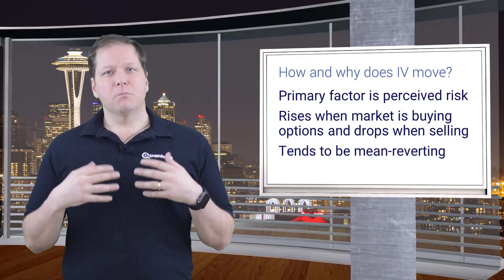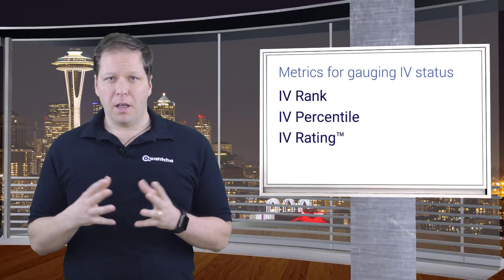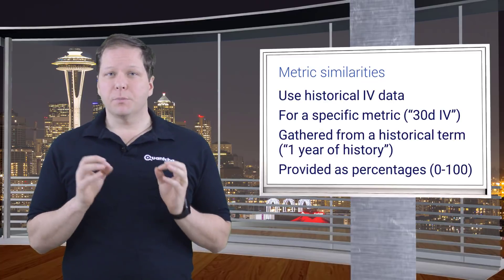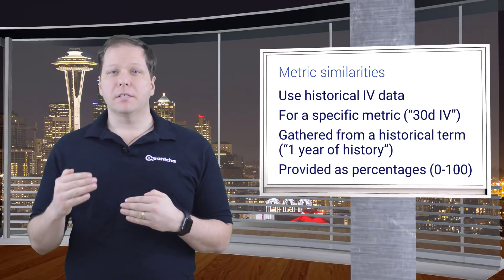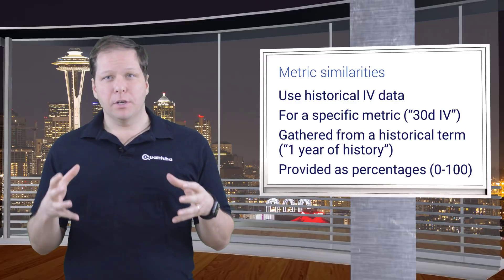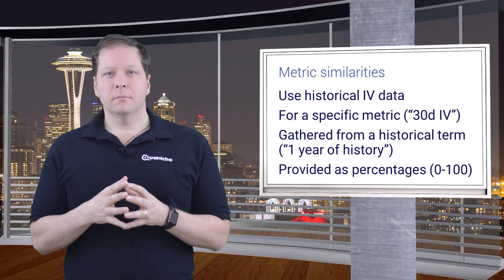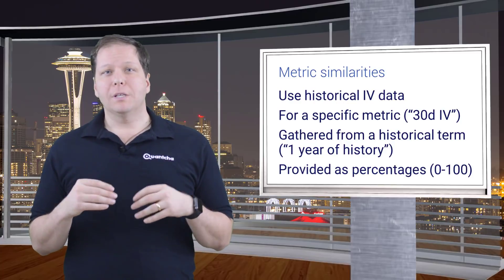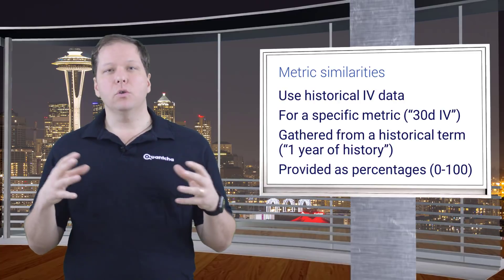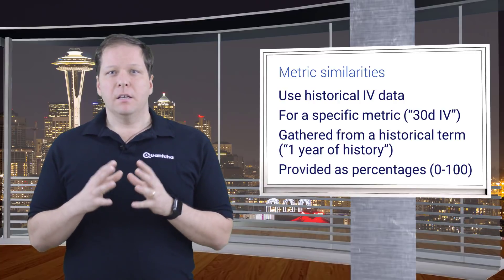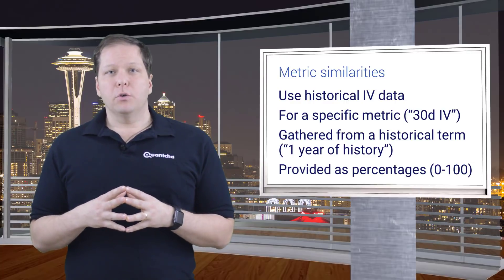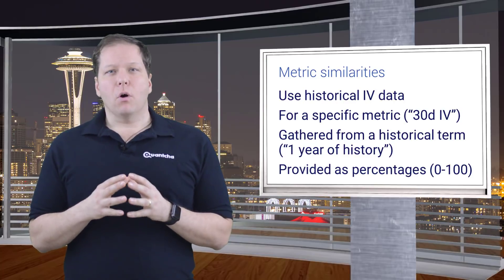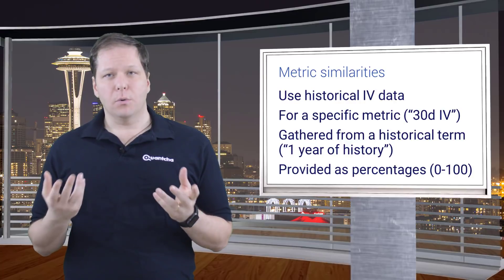Now let's dig into some of the more popular metrics used to evaluate the current implied volatility of a stock. Each of these metrics is calculated based on historical observations of a specific metric, such as the 30-day implied volatility. They also rely on a predefined time range of data, such as the trailing year of readings. Since most stocks have volatility cycles due to quarterly earnings announcements, it's important to use at least three months of history in order to include a full cycle of volatility. We use a year of data to include four complete volatility cycles, as well as seasonal factors. All three metrics are also presented as percentages, although the exact precision isn't always critical.